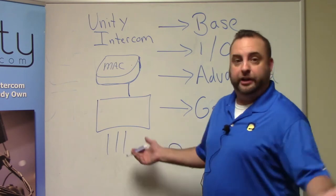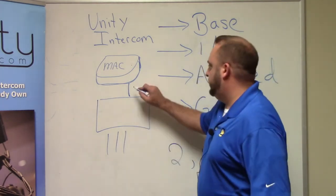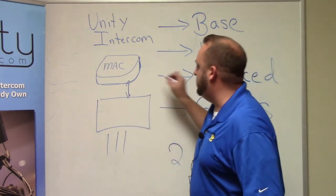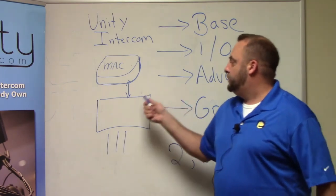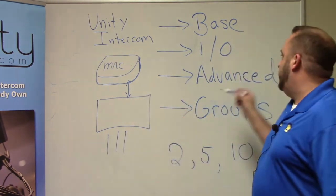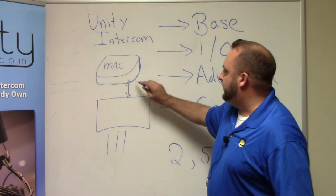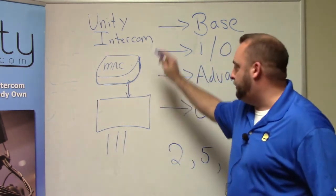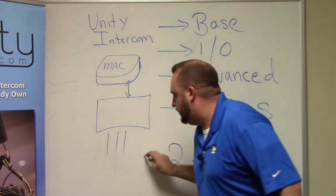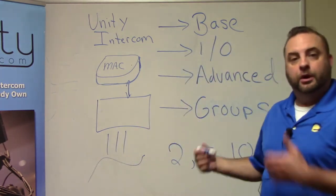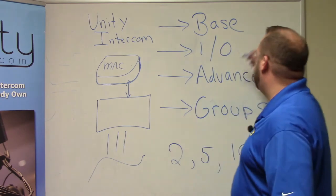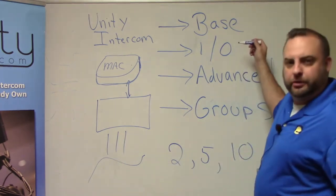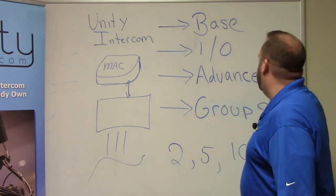It's sending and receiving from the Mac computer via USB or Thunderbolt. The I.O. license is required to be able to route those into the PL channels and to send Unity Intercom's audio back out to your existing comm system or a soundboard. You pretty much usually always need it.